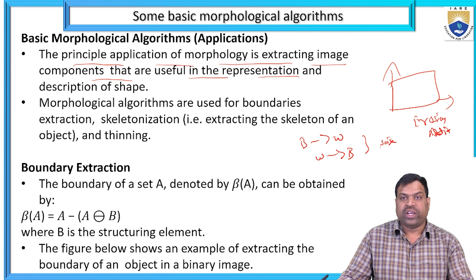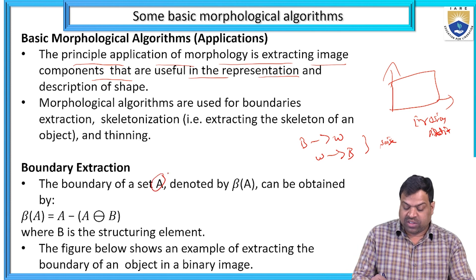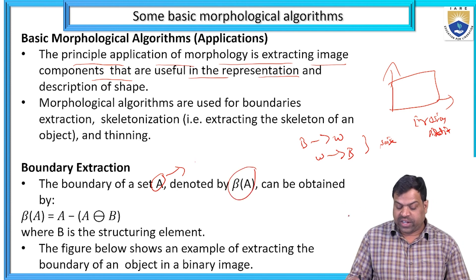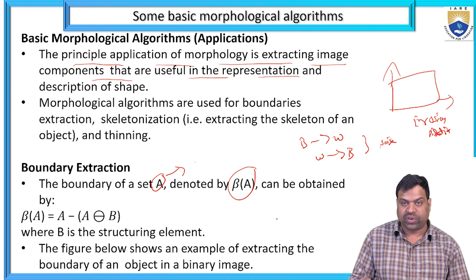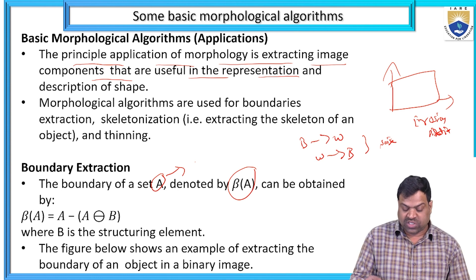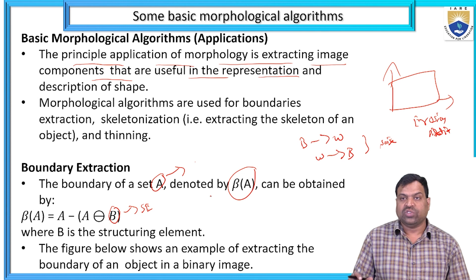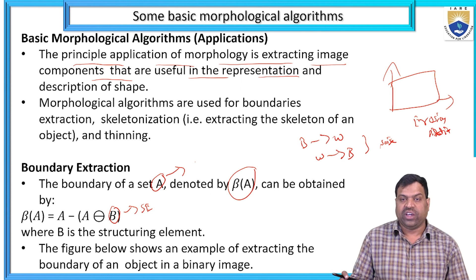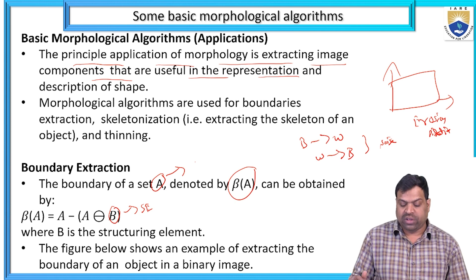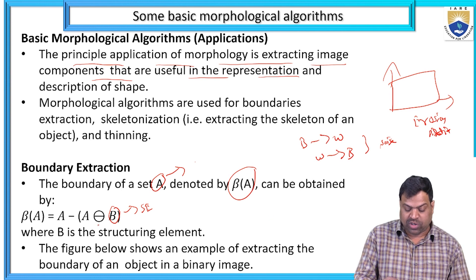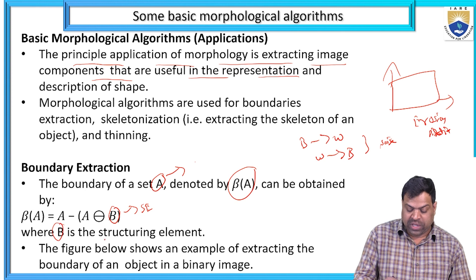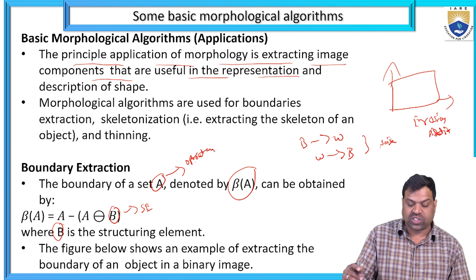When we are going for boundary extraction, the boundary of a set A is denoted by beta of A, and it can be obtained by: beta(A) = A minus (A⊖B), where B is the structuring element. A is the operator and B is the structural element SE. This operator is called boundary extraction.